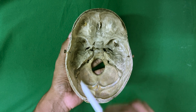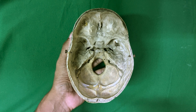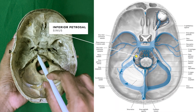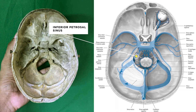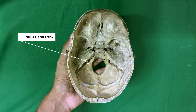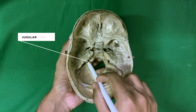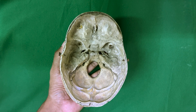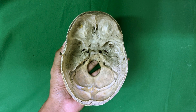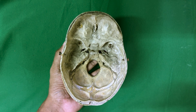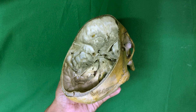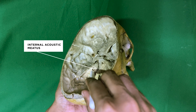On each side, the clivus is separated from the petrous temporal bone by the petro-occipital fissure, which is grooved by the inferior petrosal sinus. The jugular foramen lies at the posterior end of the petro-occipital fissure. The condylar part of the occipital bone shows the hypoglossal canal, piercing the bone postero-anterior to the jugular tubercle. The posterior surface of the petrous part of the temporal bone forms the anterolateral wall of the posterior cranial fossa. The internal acoustic meatus opens above the anterior part of the jugular foramen.